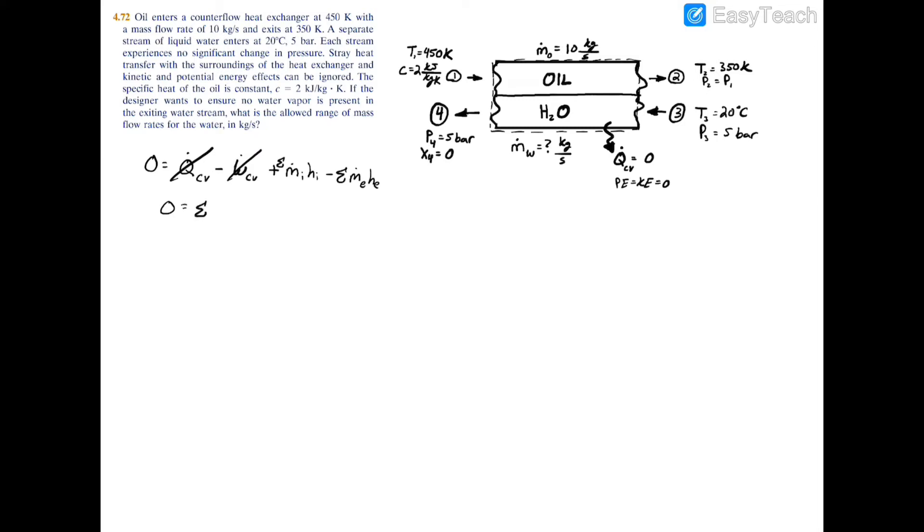the summation of m dot i hi minus the summation of m dot e he. Now if we apply this equation to our specific problem here, we're going to have zero equals m dot i.